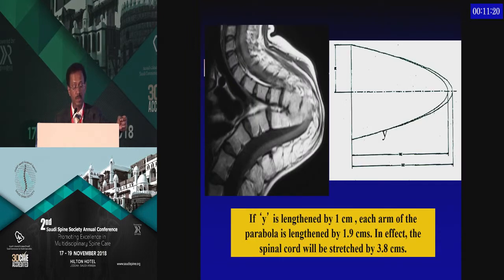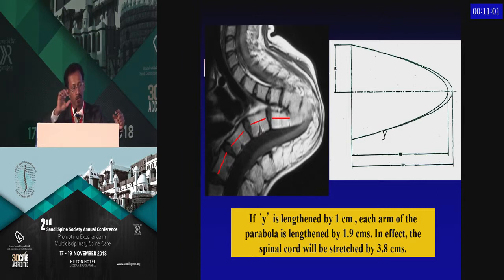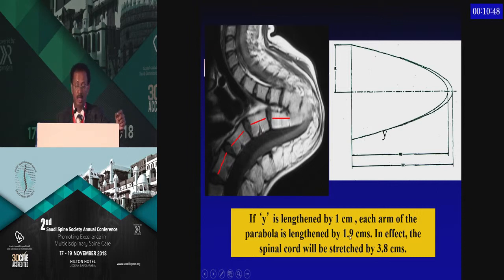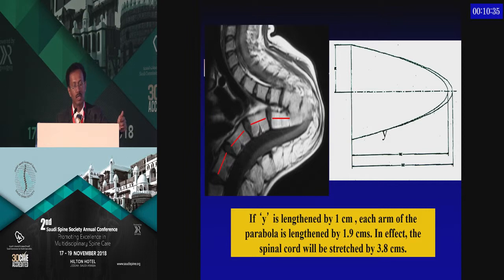There is another important physiological aspect. Because of the horizontalization of these vertebrae, the normal center of gravity forces are not transmitted through them, and these vertebrae grow much longer than normal — almost like those of quadruped animals. This increases the parabola over which the spinal cord must travel. We found that if the parabola is lengthened by 1.9 centimeters, the spinal cord is stretched by 3.8 centimeters. This is exactly why patients with gross deformity from childhood TB end up with a stretched spinal cord and late neurological deficit many years later.